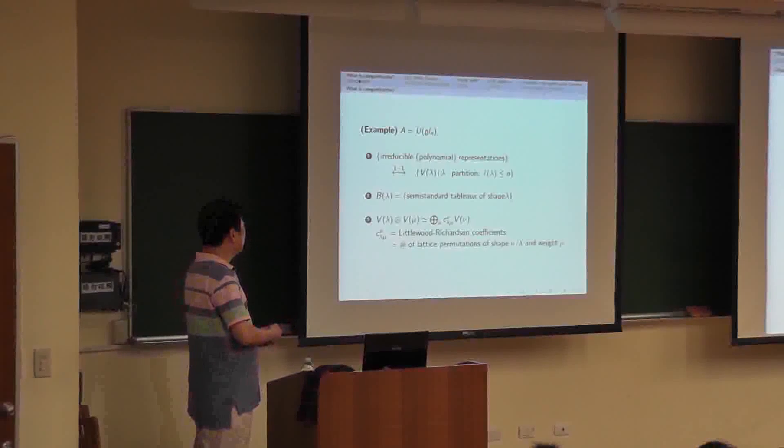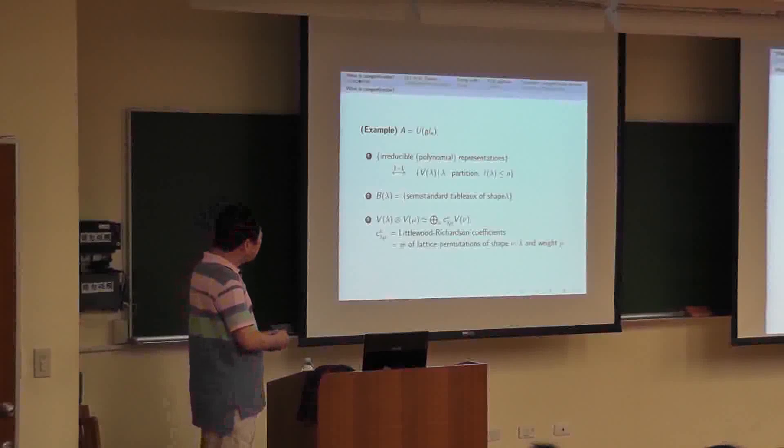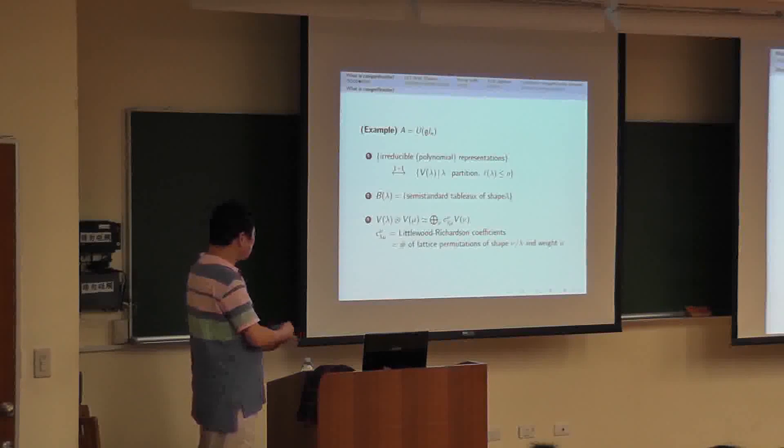Then the number of semi-standard tableau of shape lambda gives the dimension of an irreducible representation via lambda. Also, if we decompose the tensor product of two irreducible representations, then the number of irreducible copies...